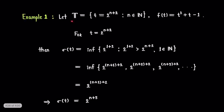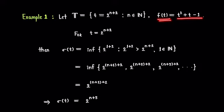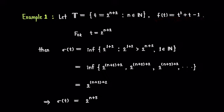Let us consider a timescale T containing all numbers of the form 2^n + 2, where n is some natural number, and f is a function such that f(t) = t² + t - 1. Now we are going to find the forward shift of this function f(t). Let us consider an element t in this timescale, which equals 2^n + 2 where n is some natural number.